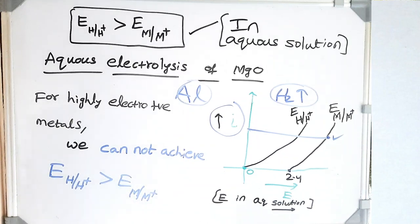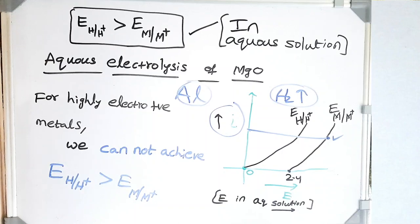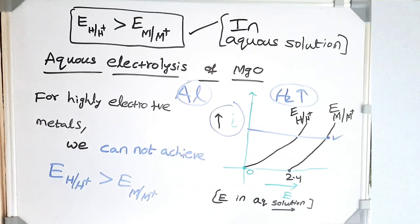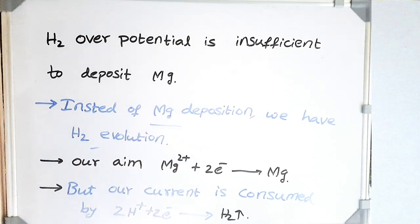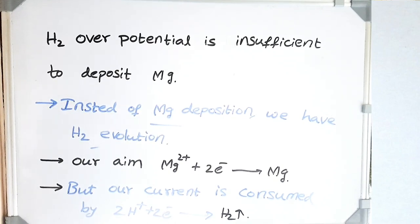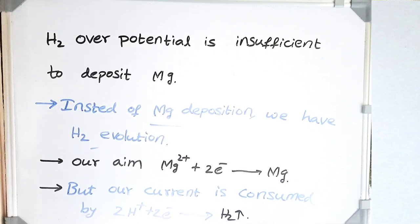We never want hydrogen evolution reaction. For all highly electropositive metals, we cannot use aqueous electrolysis because we can never reach a potential greater than the metal deposition potential. The hydrogen overpotential is insufficient to deposit magnesium — before reaching the deposition potential of magnesium, hydrogen evolution takes place, which is completely undesirable. Instead of magnesium consuming the current, hydrogen is consuming electrons and producing hydrogen gas. So we cannot use aqueous electrolysis to produce magnesium or aluminium.